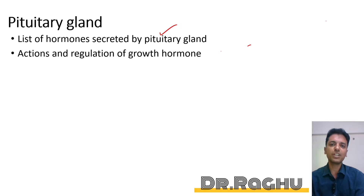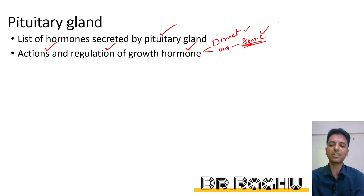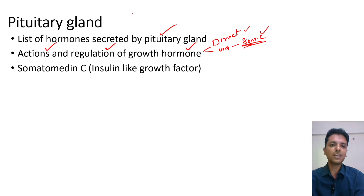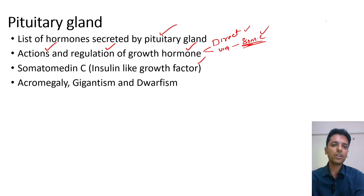From the anterior pituitary, one important hormone to study is the growth hormone — both its actions and its regulation can be asked. The growth hormone has a direct action and also an indirect action occurring via a chemical called somatomedin C, also known as insulin-like growth factors. Don't forget to write both the direct and the indirect actions via somatomedin C. Somatomedin C itself can also be asked separately as a short note — a five or six marker question.